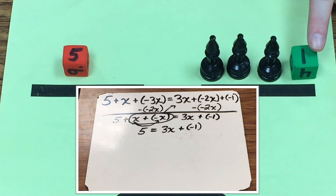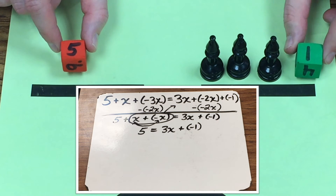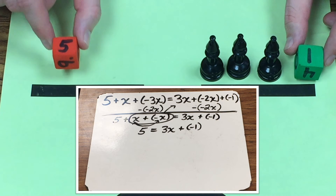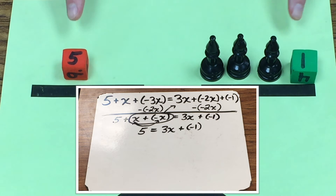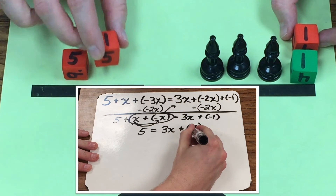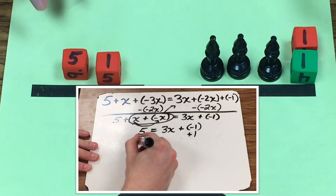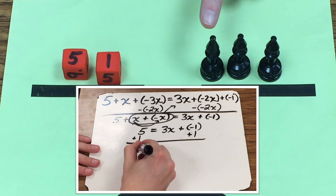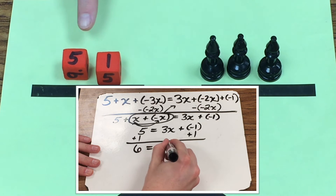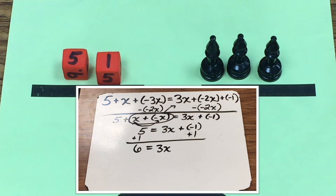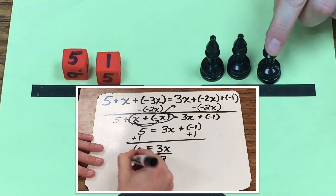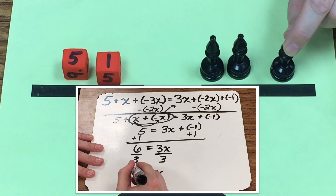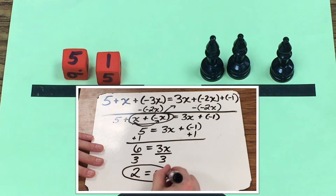My next objective is to get the black pawns by themselves, so I want to get rid of the green 1. I can't remove it because I have a green 1 and a red 5, which are not the same thing. So I'm going to add a red 1 to both sides. Now I have a pair of zero that I can remove, and I'm left with 3x equals 6. Six divided by 3 equals 2, so each black pawn equals positive 2.